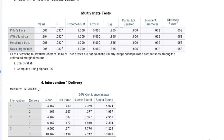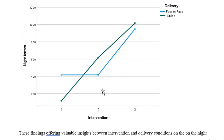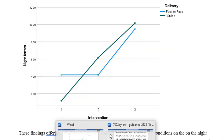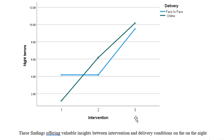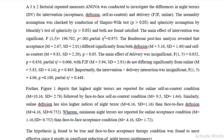Looking at the plot, (1,1) means acceptance and the green line means online. The least number of night terrors are obtained for the acceptance intervention type delivered online. However, for intervention type 3 — self-as-context — delivered online, we get the highest number of night terrors. We will now interpret the whole results. A 3 by 2 — three intervention types by two delivery types — factorial repeated measures ANOVA was conducted to investigate differences in night terrors across intervention and delivery types.